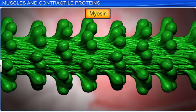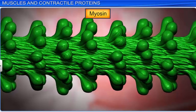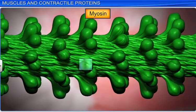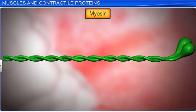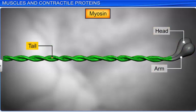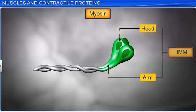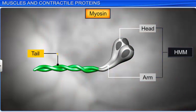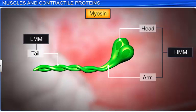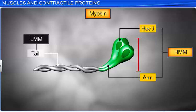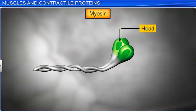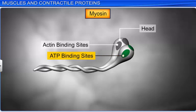Each myosin or thick filament is a polymerized protein. It is made up of many monomeric proteins called meromyosins. Each meromyosin consists of two important parts: a globular head with a short arm, and a tail. The globular head and arm are heavier than the tail, and are therefore called heavy meromyosin, or HMM, while the tail is called light meromyosin, or LMM. The HMM component projects at regular distances at an angle from the surface of the myosin filament, and is called the cross arm. The head has binding sites for actin and ATP. Additionally, it has an active ATPase enzyme that breaks down ATP into ADP plus inorganic phosphate, thereby releasing energy.